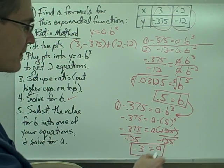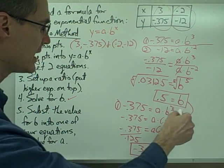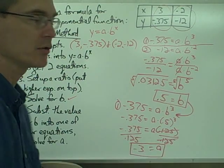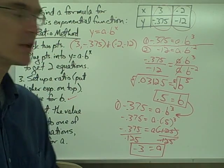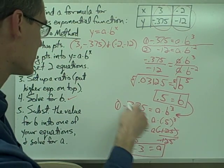So now I have a value for a, I have a value for b. I can take both of these values, both of my parameters, and plug them into the form of my equation, and I have my equation.